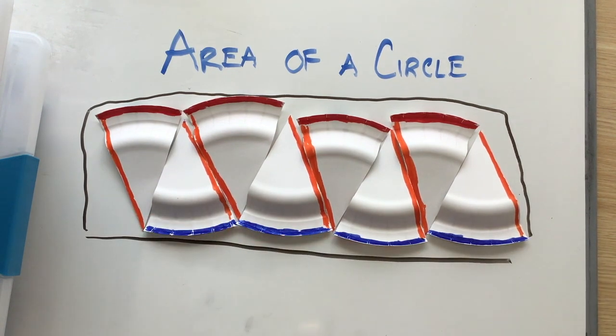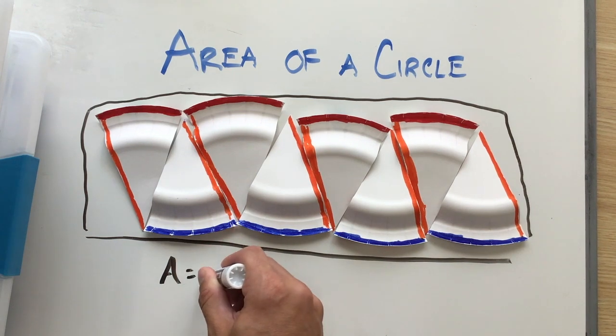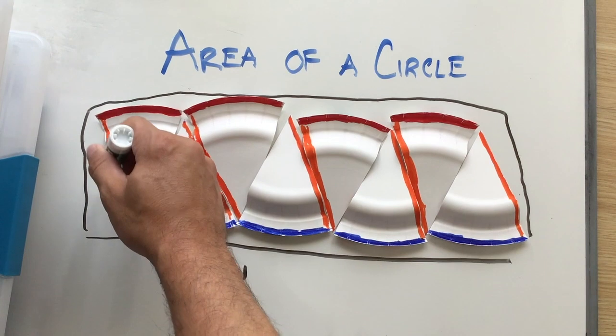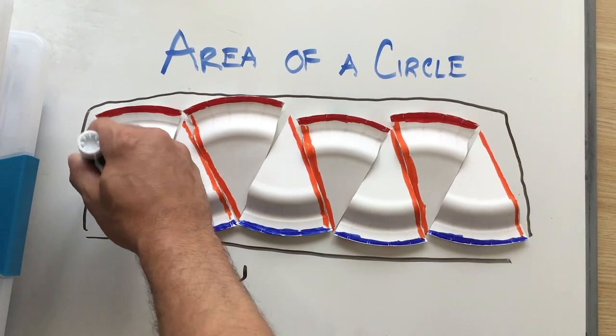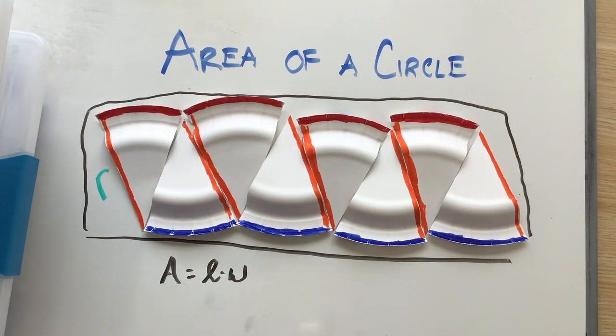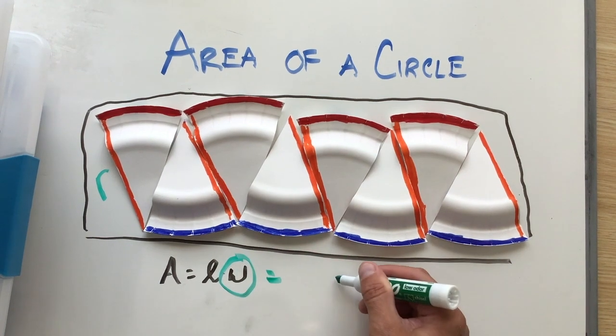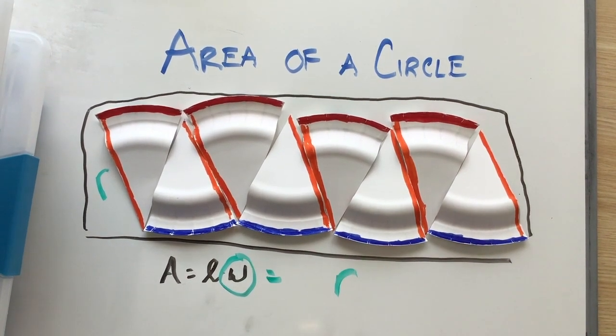because what we've learned is that area is length times width of a rectangle. So here the question becomes, what is my length and what is my width? So in this case, this is my width here. Well, that orange line, that's just half your diameter. That's your radius. So instead of writing width in the formula, I'm just going to replace that with a radius.